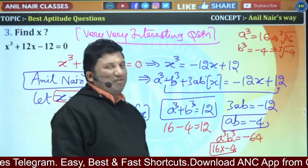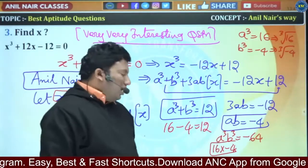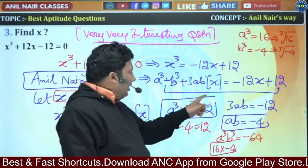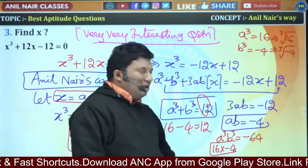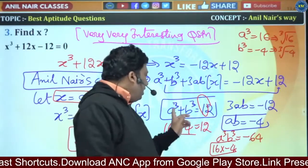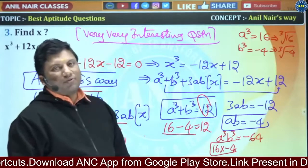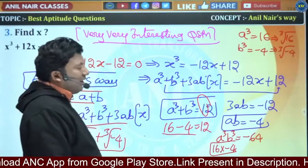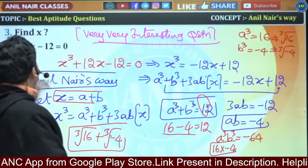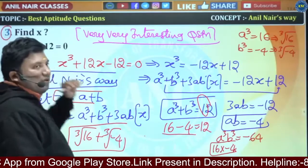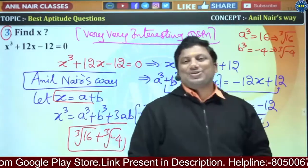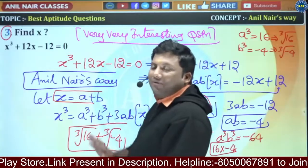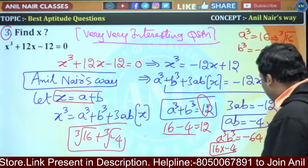Solving by shifting b in terms of a would be very difficult, so I cubed the equation: a³b³ = -64. The factors: 1 × (-64), 2 × (-32), 4 × (-16) give -12, but I need +12. So 16 × (-4) works: a³ = 16, b³ = -4. This is a very innovative way to solve a cubic equation!